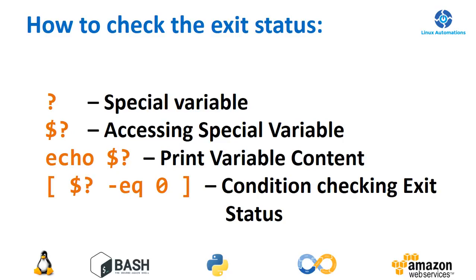Now let's see how to check the exit status in a shell. There is a special variable available — a dynamic variable that stores the exit status of the previously executed command. That special variable is the question mark (?). To access it, we use the dollar character preceding the question mark: $? — this gives the exit status of the previously executed command. I'll use the echo command to print the exit status on the screen.